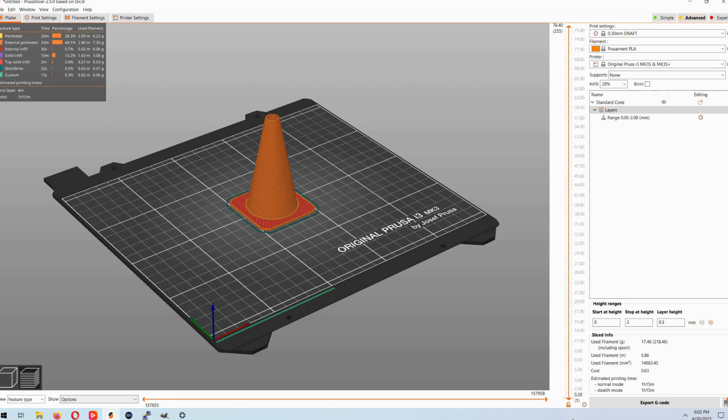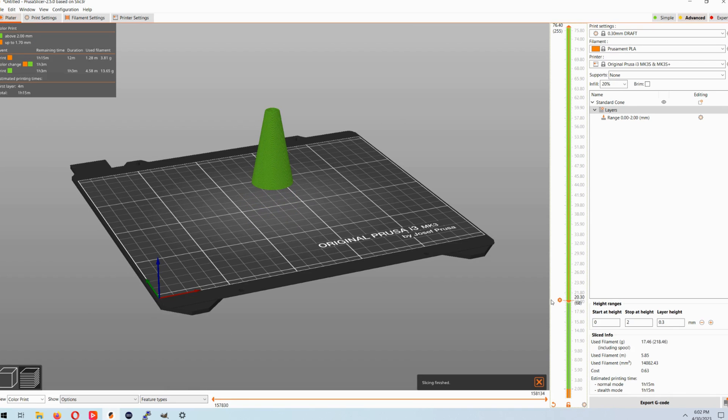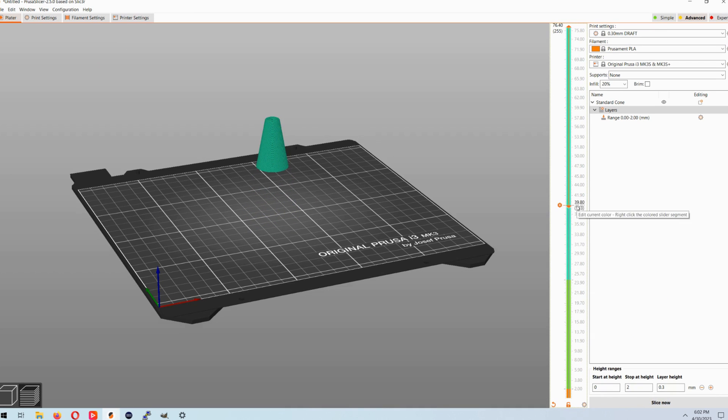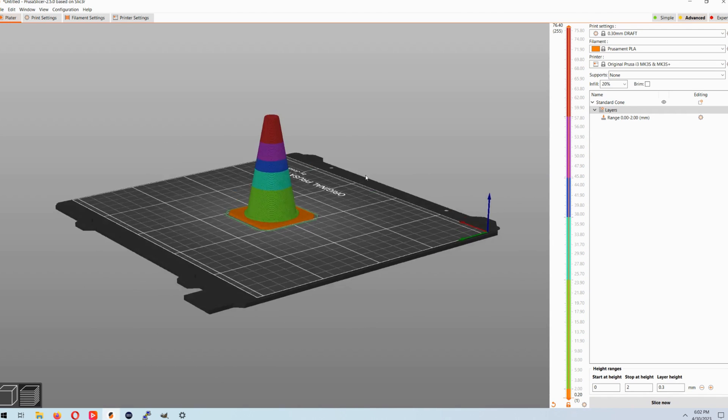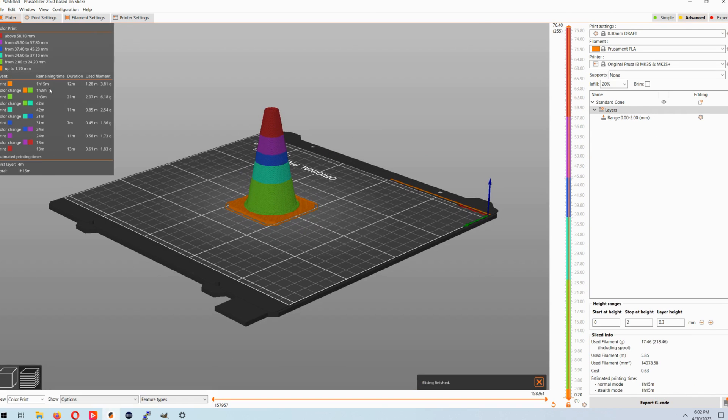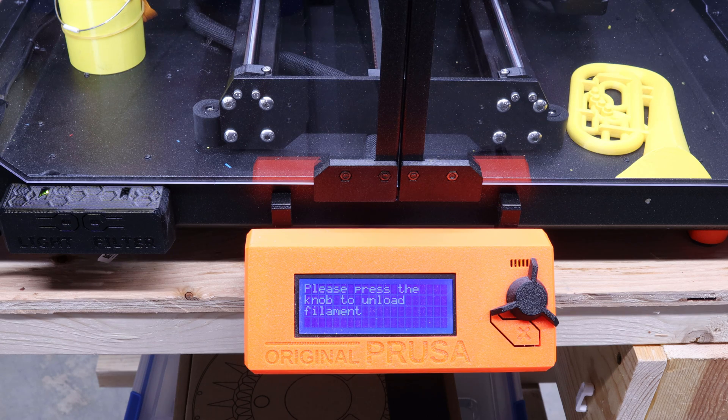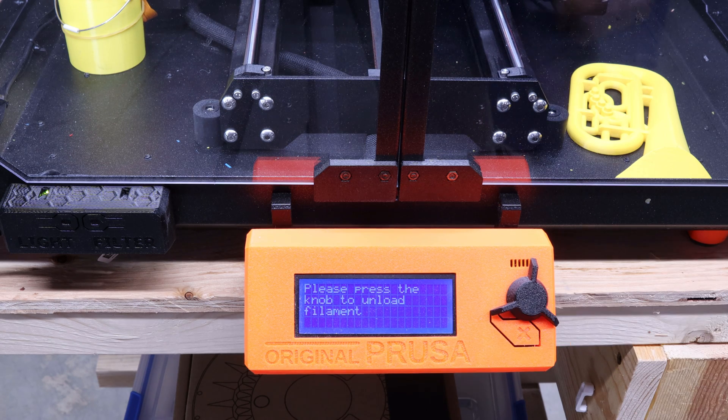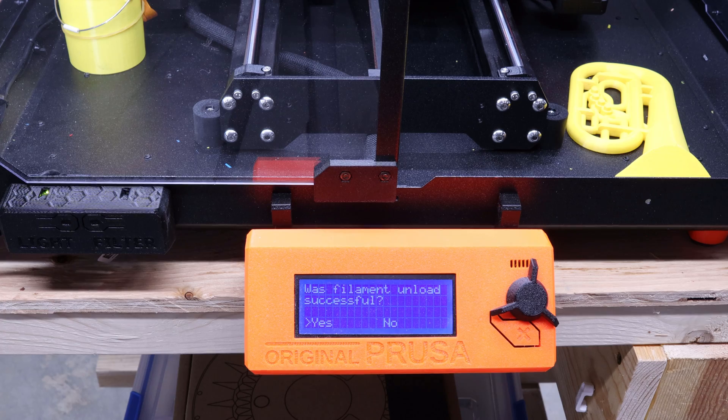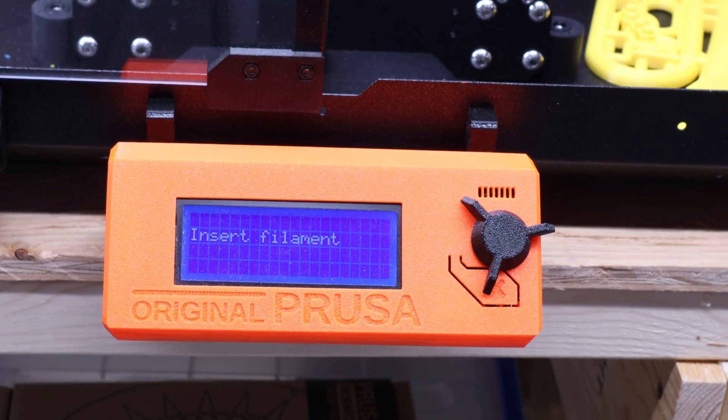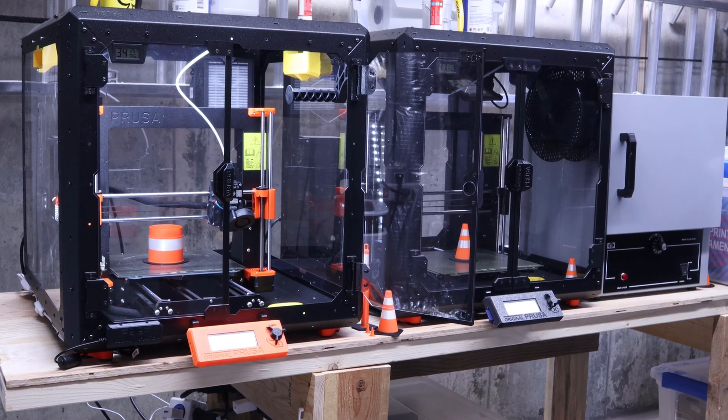In PrusaSlicer all you have to do is slice your model, then you just scroll through the layers and add break points where you want PrusaSlicer to change between colors. My Prusa Mark III does a great job of listing how many minutes are remaining until the next color change. There are also good prompts to help you along if a filament load or filament unload is unsuccessful.